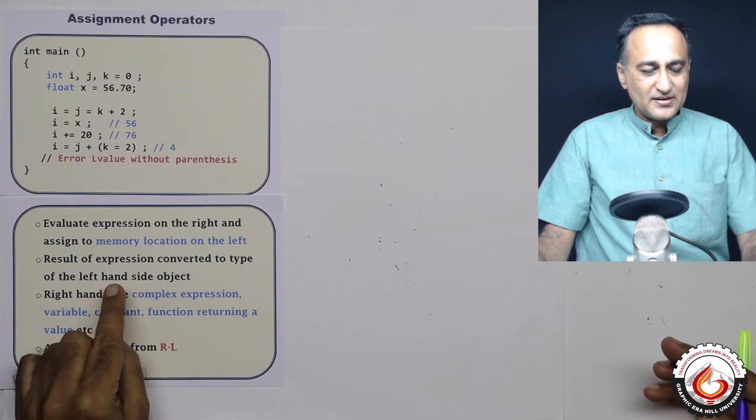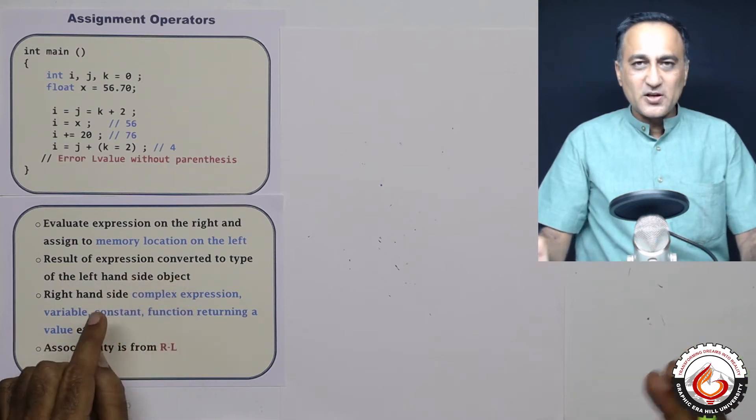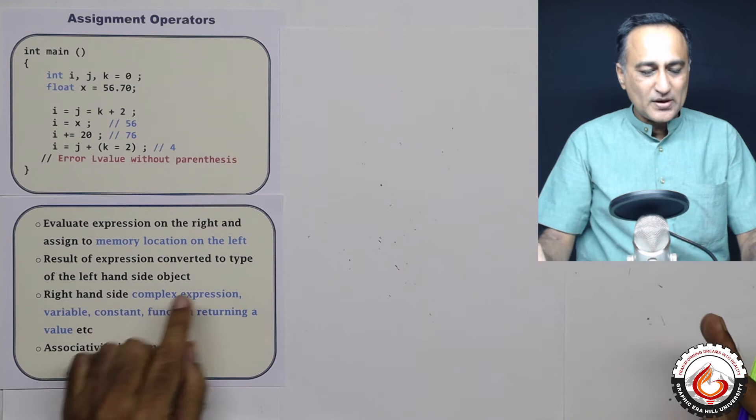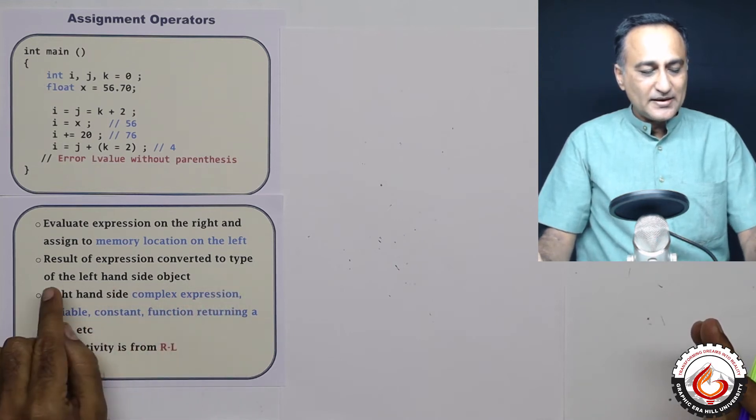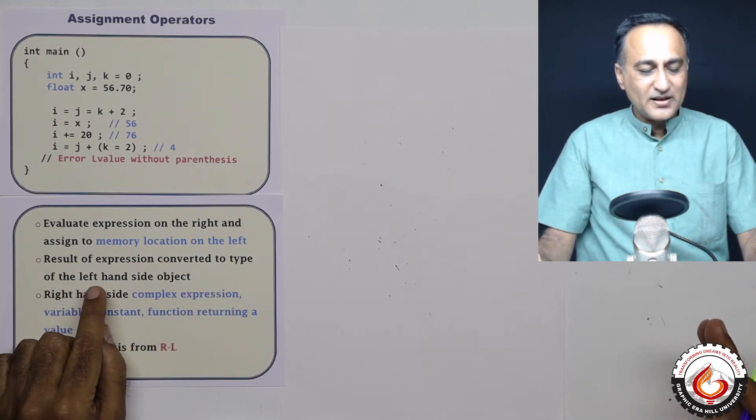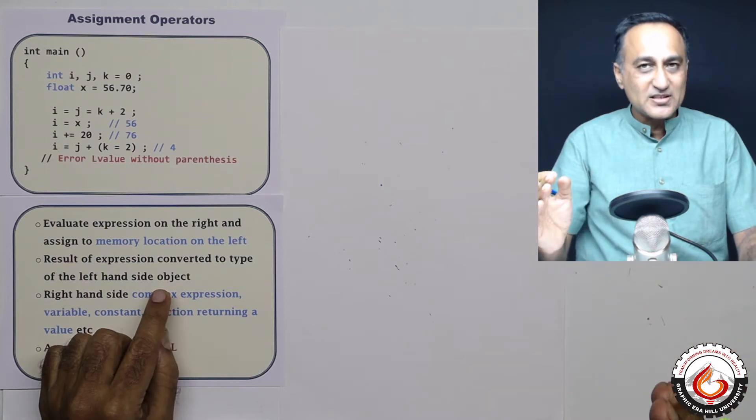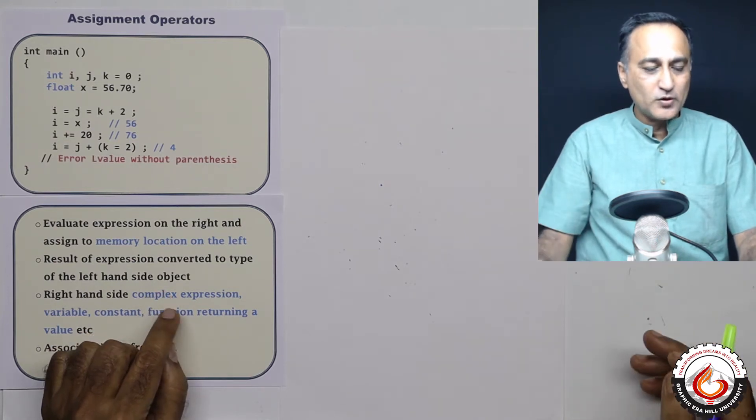Now you need to understand the result of the expression evaluation on the right is always converted to the type or the data type of the left hand side memory location. And you need to exercise due care when you're trying to do that.